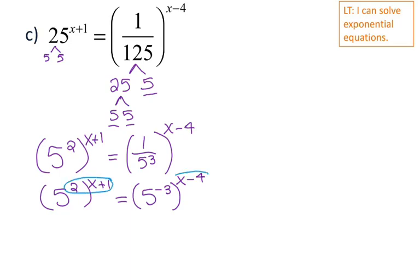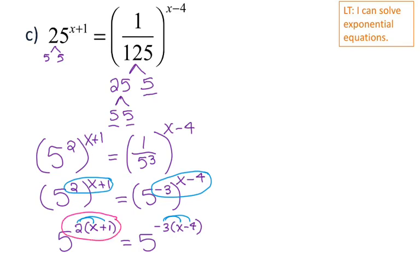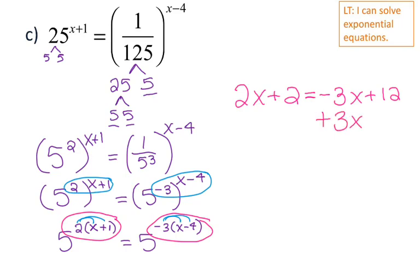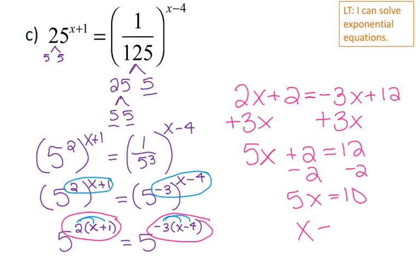So again, I am raising a power to a power, so I'm going to multiply my exponents. So I have 5 to the 2 times x plus 1 equals 5 to the negative 3 times x minus 4. And then I'm going to distribute. And since my bases are the same, I can just focus on my exponents. So I'm going to rewrite my equation over here. When I distribute the 2, that gives me 2x plus 2. And then I'm going to distribute the negative 3, so that gives me negative 3x plus 12. Now I'm going to solve for x. So I'm going to get my x's on the same side, so I'm going to add 3x to both sides. That gives me 5x plus 2 equals 12. Subtract 2 from both sides, so I get 5x equals 10, so x equals 2.